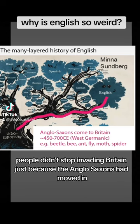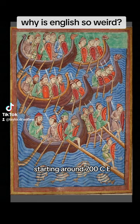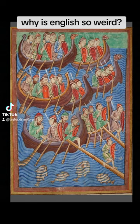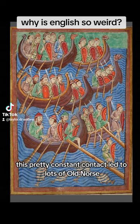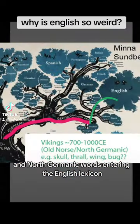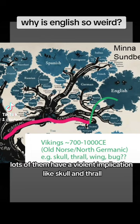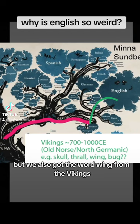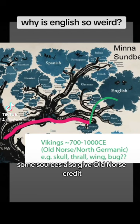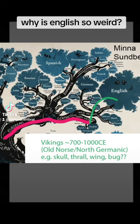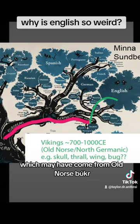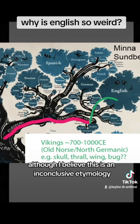Of course, people didn't stop invading Britain just because the Anglo-Saxons had moved in. Starting around 700 CE and continuing for hundreds of years, Vikings began raiding the island. This pretty constant contact led to lots of Old Norse and North Germanic words entering the English lexicon. Lots of them have a violent implication, like skull and thrall, but we also got the word wing from the Vikings. Some sources also give Old Norse credit for the oldest version of the English word bug, which may have come from Old Norse buchr, although I believe this is an inconclusive etymology.